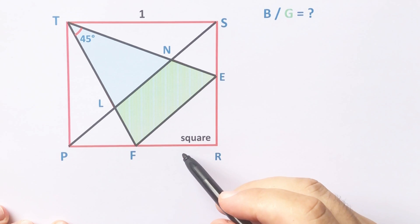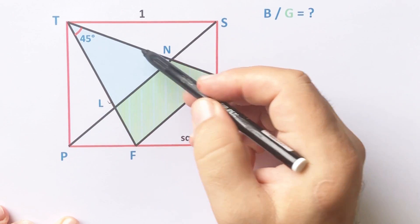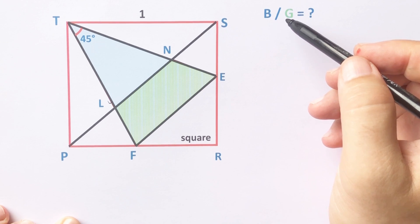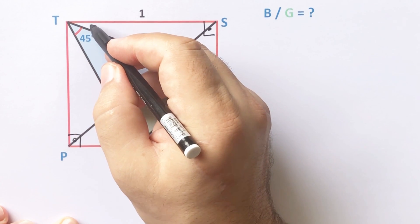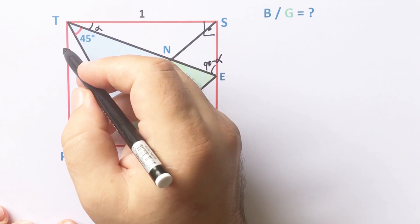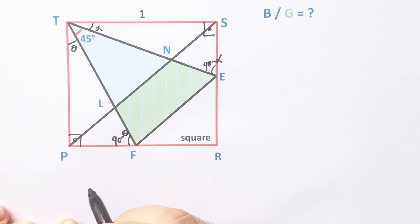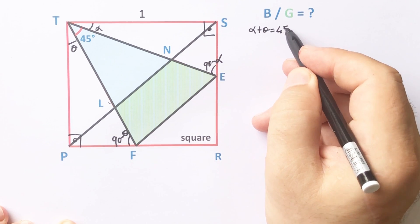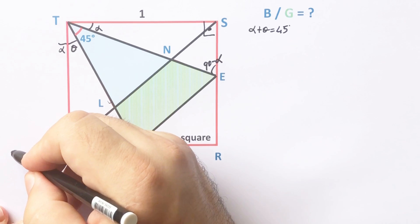Hello everyone. In this video we have one square — here is 45 degrees and here is one unit. The blue shaded area equals p, the green shaded area equals g, and the ratio of these two areas is asked. We know these angles are 90 degrees because of the square. Let's call this angle alpha, so this angle must be 90 minus alpha, and let's call this angle theta, so this angle must be 90 minus theta. Notice that alpha plus theta equals 45 degrees.